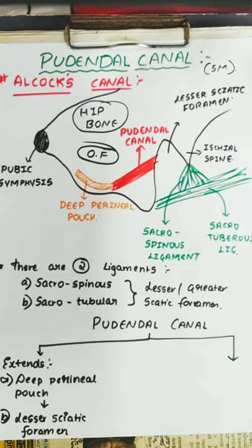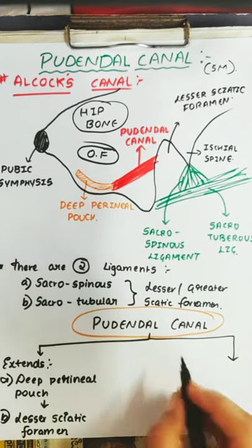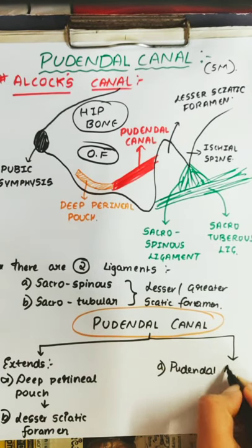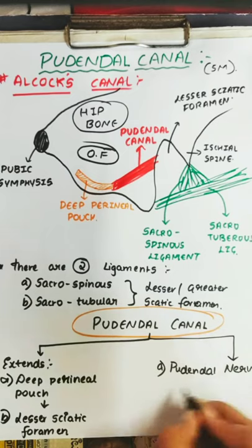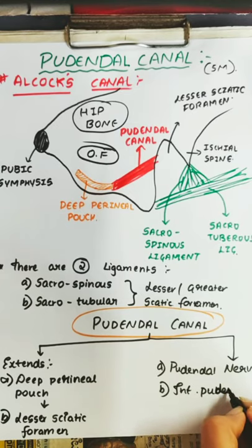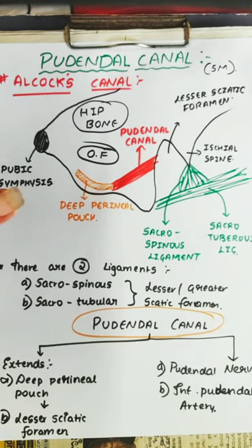What are the contents of the pudendal canal? It contains the pudendal nerve as well as the internal pudendal artery.